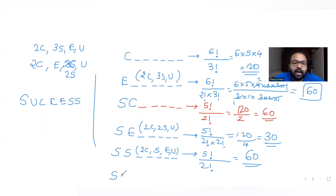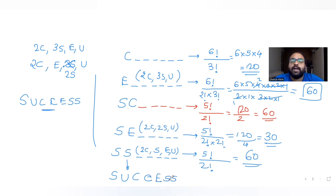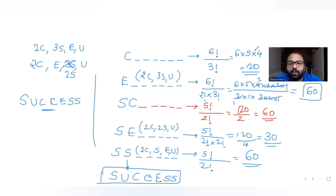After SS, in dictionary order, both C's come next, then E, then the remaining S's. Following that sequence gives us the word SUCCESS itself.